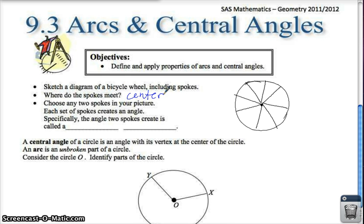Choose any two spokes in your picture. Each set of spokes creates an angle. So if I choose these two spokes from my picture, they create an angle right here. Specifically, the angle two spokes create is called a central angle. Because it's based around the center of the circle. So this right here is called a central angle.